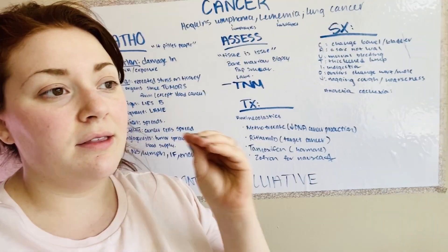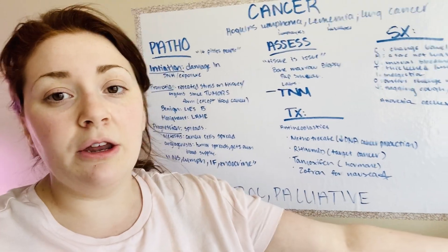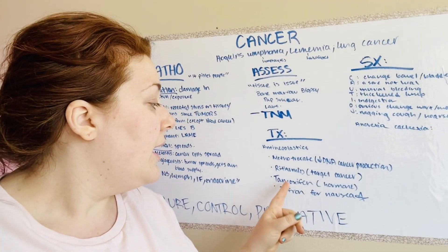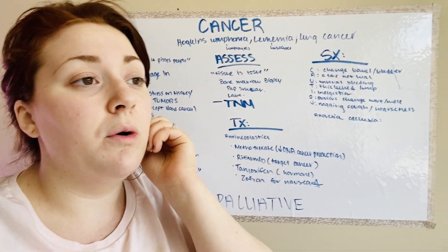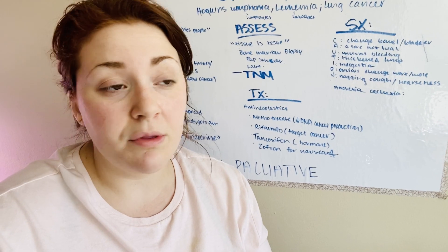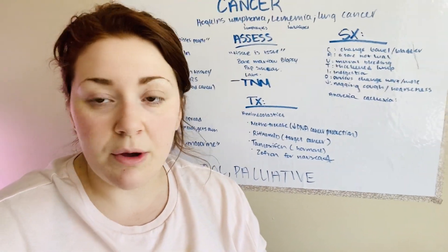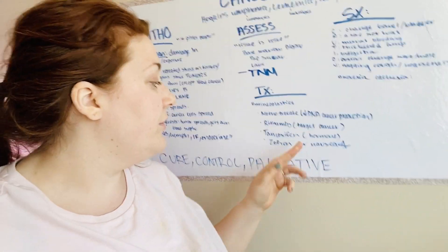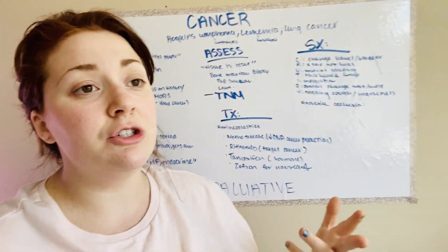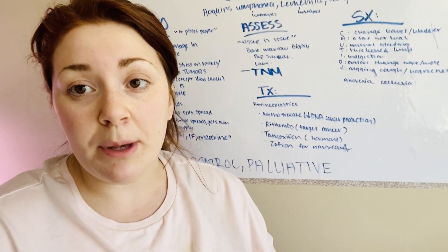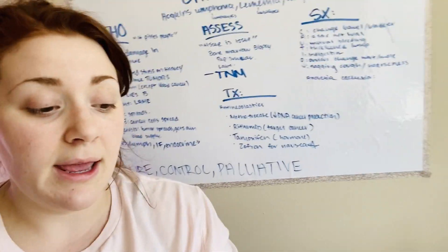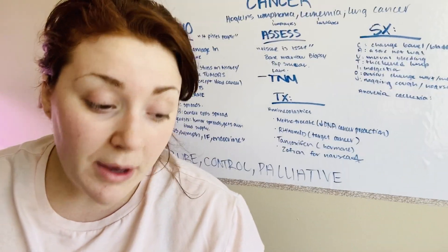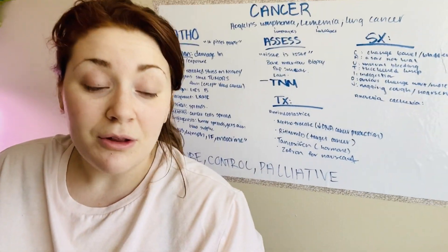Rituximab targets the cancer specifically. Some antineoplastics are broad spectrum and will attack any cancer cells, whereas Rituximab targets it specifically. Then Tamoxifen, which is a hormone cancer drug — some cancers feed off hormones, like prostate feeding off testosterone, or ovarian and breast cancer feeding off estrogen, so we want to decrease those hormone levels, cutting off the food supply. A big medication that changed many lives is Zofran, because chemotherapy can make you nauseous — it's an anti-nausea drug. They also give anti-diarrheals, magic mouthwash for mouth sores, and appetite stimulants like Megace or medical marijuana.